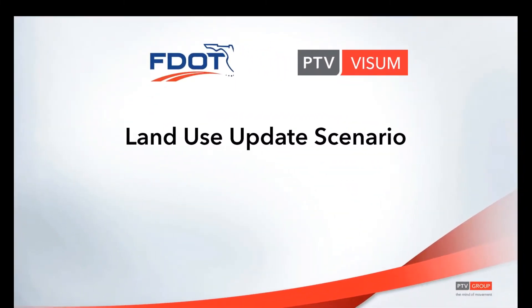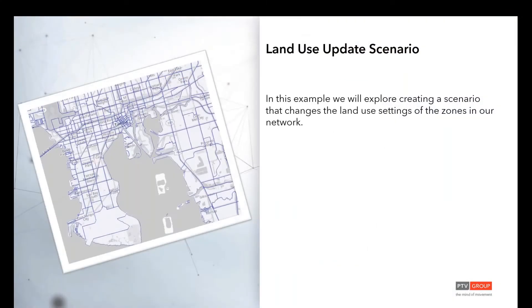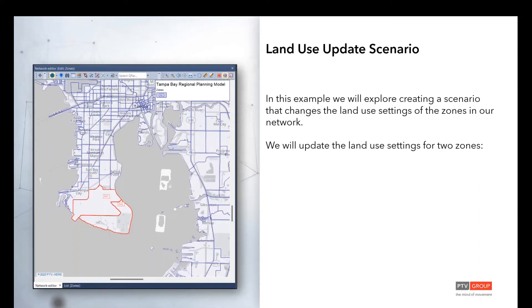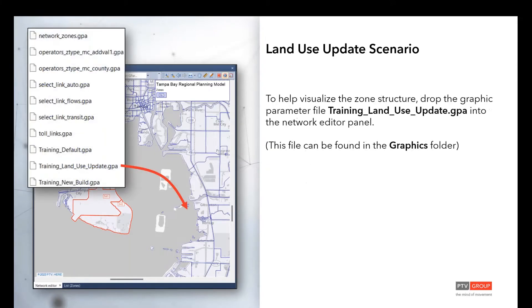For the land use update scenario, this might be paired with a physical build or it might not be. In this case, we're just going to take an example where we're only going to be building out a specific land use. We're going to look at zones 541 and 542 — I believe that's the Air Force Base — and we're going to be using a land use update graphic parameter file to help us visualize what we want to be doing.